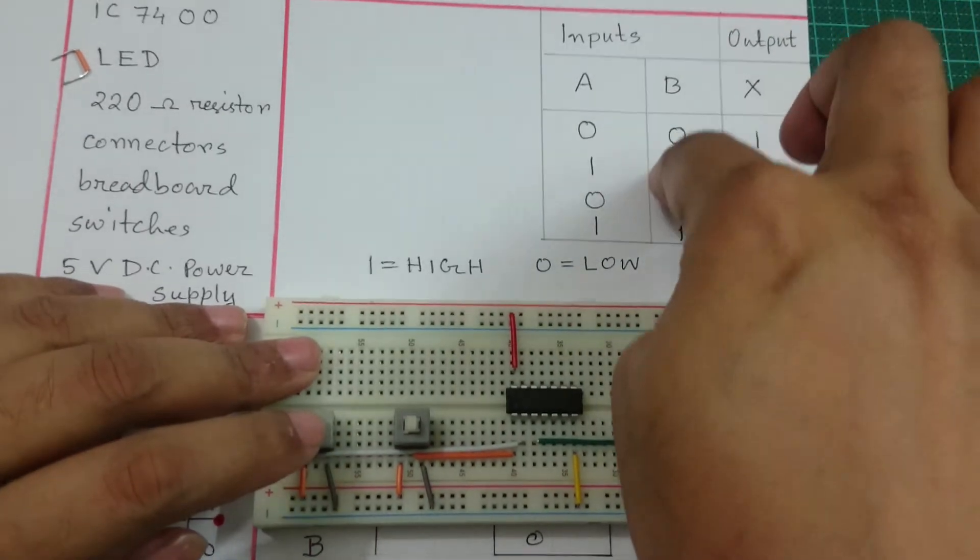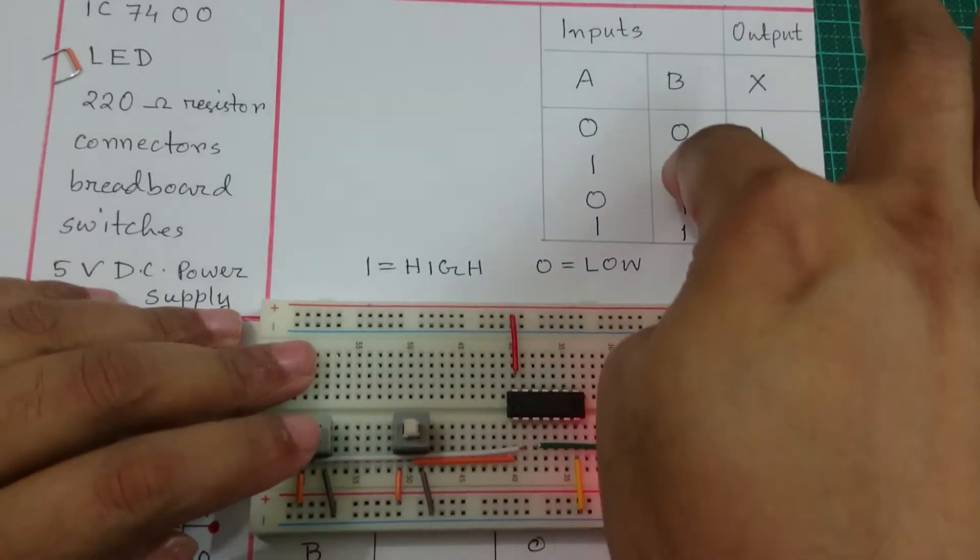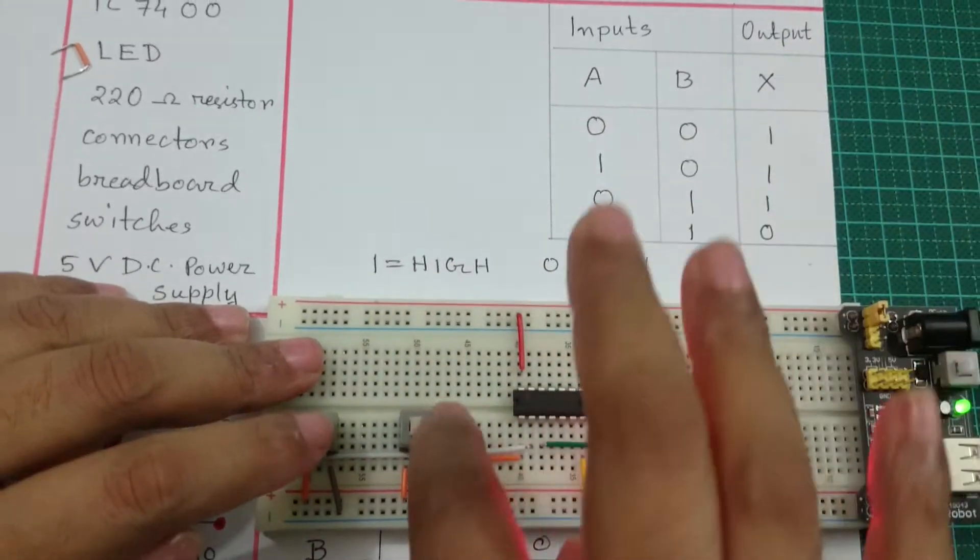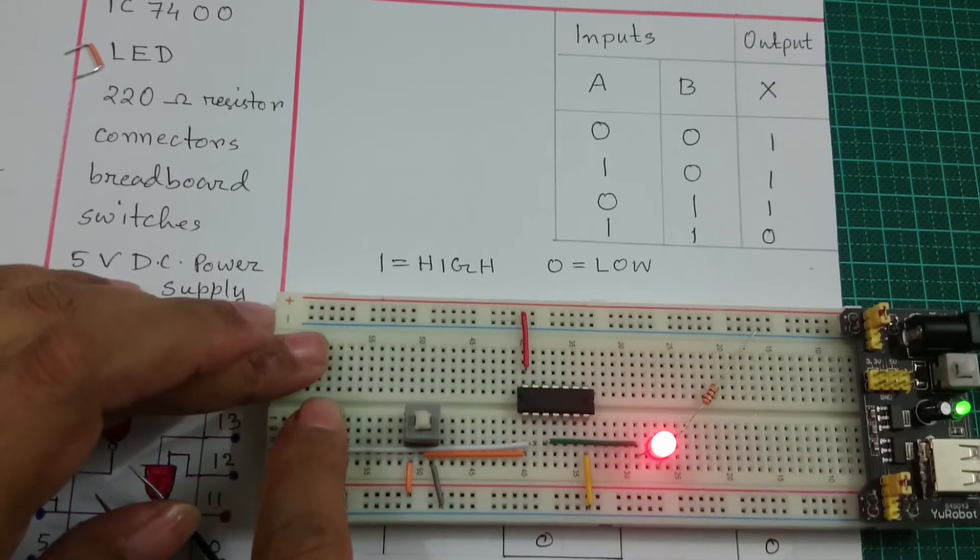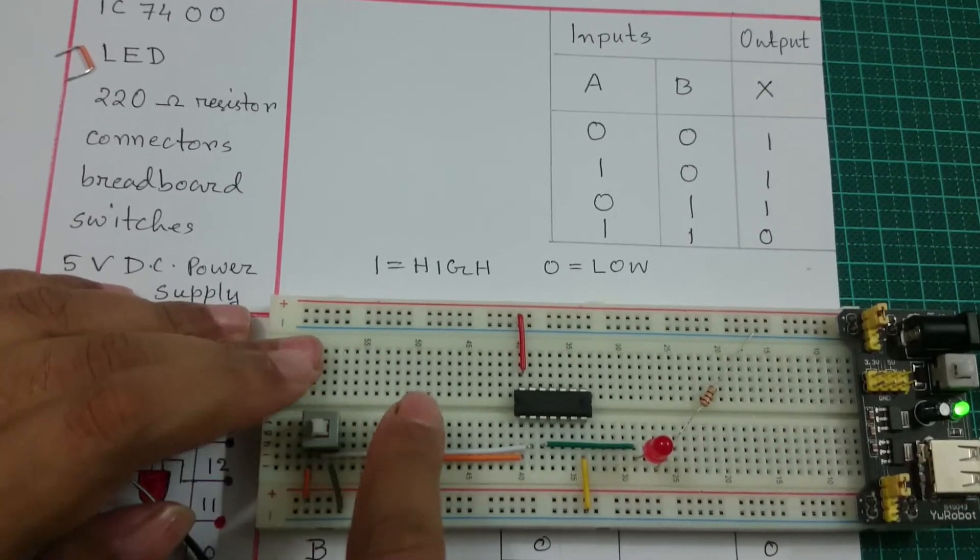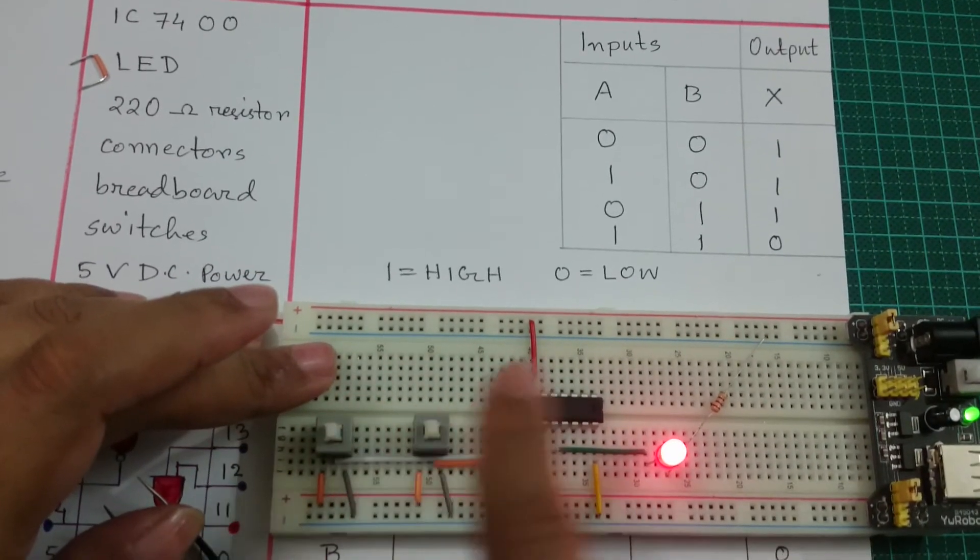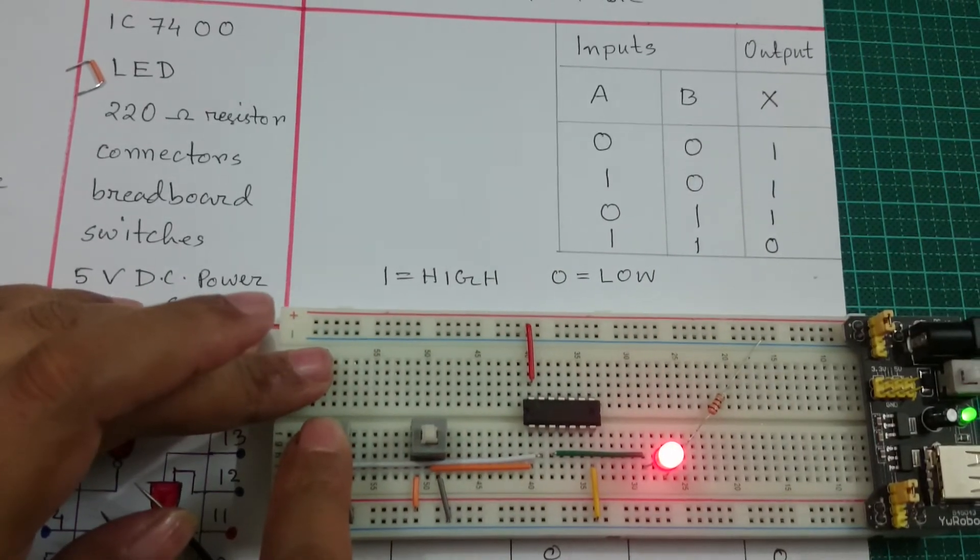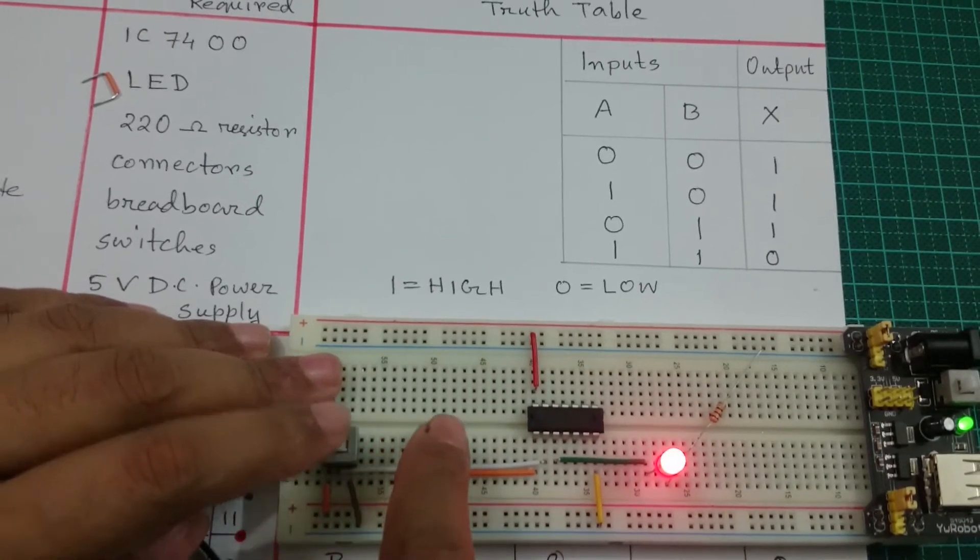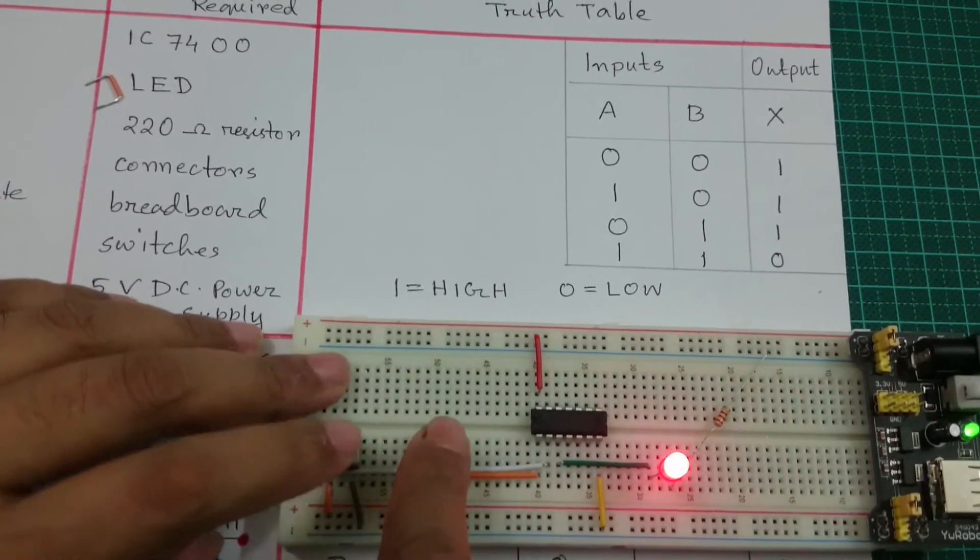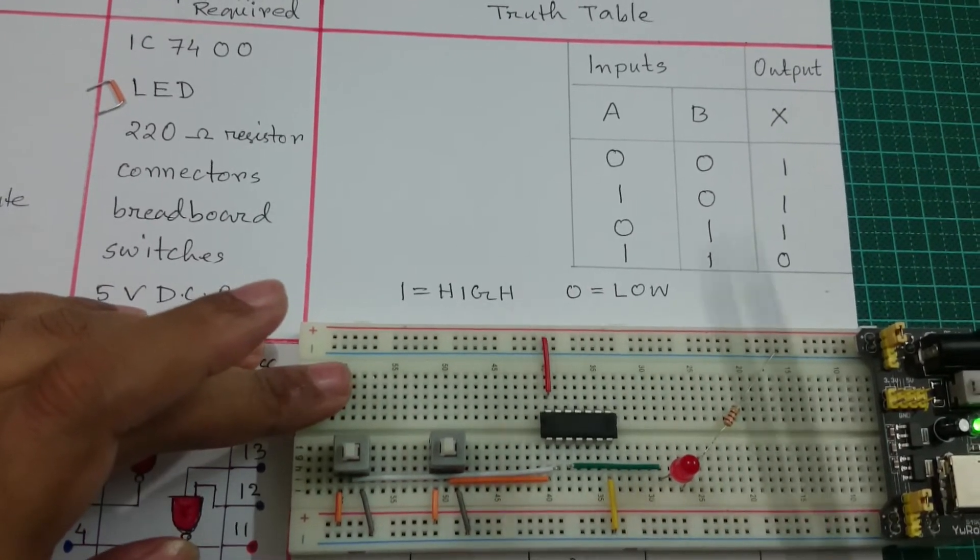When A is 1 and B is 0, the output is 1. When both A and B are 0, the output is 1. This proves the truth table.